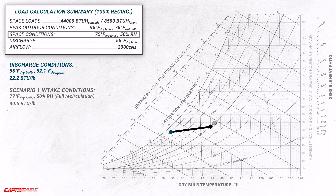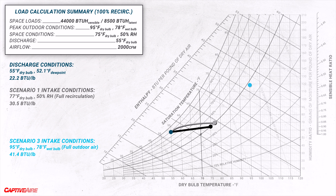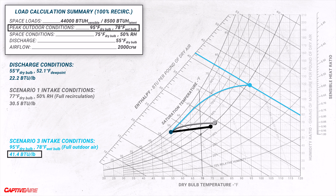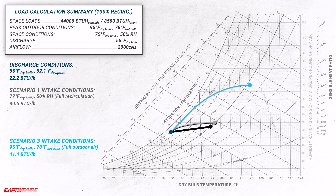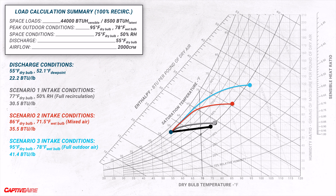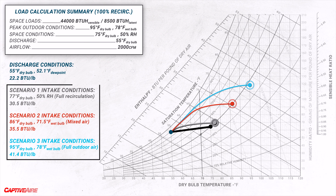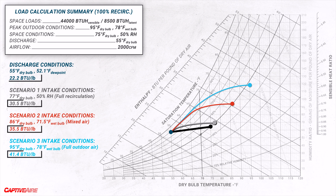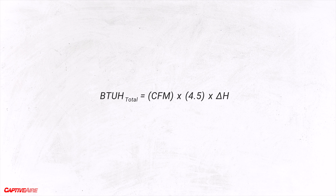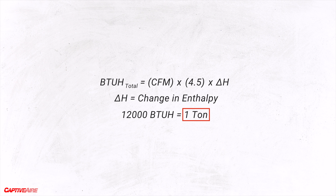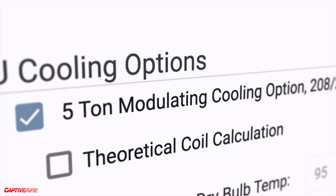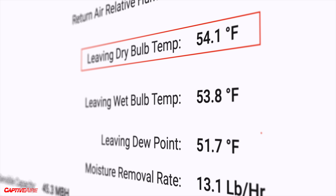This target discharge has an enthalpy of 22.2 BTUs per pound of dry air, and this point will satisfy both sensible and latent loads at 2,000 CFM. For Scenario 1 (100% recirculation), the starting point is essentially the same as target space conditions, and the cooling curve looks like a short line. For Scenario 3 (100% outdoor air), the starting point is peak outdoor air conditions with a much higher starting enthalpy. For Scenario 2 (50% outdoor air), we draw a line from space conditions to outdoor air conditions and go 50% of the way up that line to get our mixed air starting point. Notice that regardless of ventilation amount, we discharge 2,000 CFM at the same temperature and humidity — what changes is the intake air starting point.